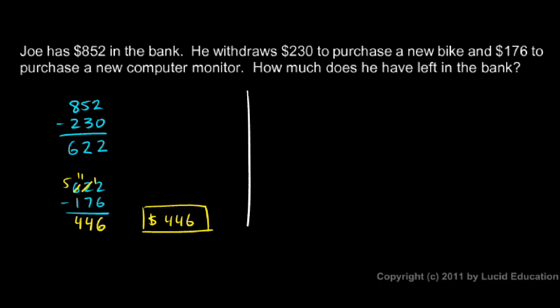Now I will also show you another way to solve this problem. I could take the amount that he's withdrawing, $230, and then the amount that he's withdrawing in the second withdrawal and add those up.